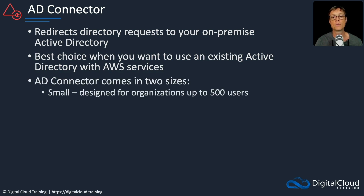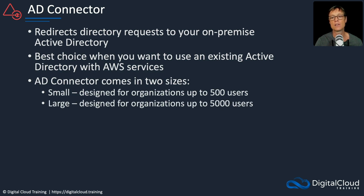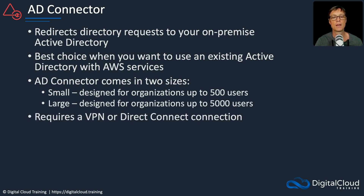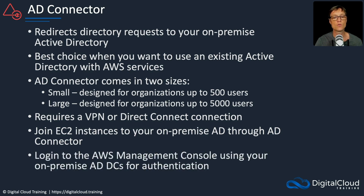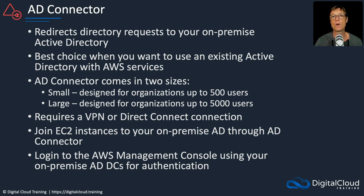AD Connector comes in two sizes: small for up to 500 users, and large for up to 5,000 users. It requires a VPN or Direct Connect connection, and you can join EC2 instances to your on-premises AD through it. It also allows you to log into the AWS Management Console using your on-premises AD domain controllers for authentication. In other words, you can have a user account in your on-premises Active Directory and use that account to log into the AWS console — it achieves this through a role on the AWS side that you end up assuming.